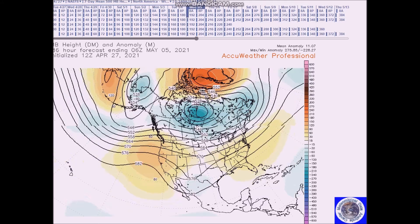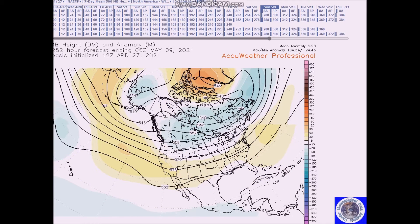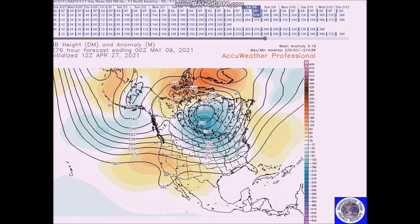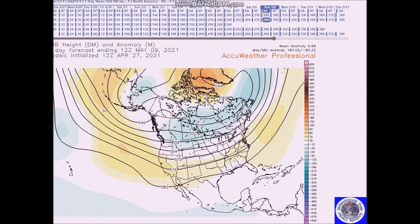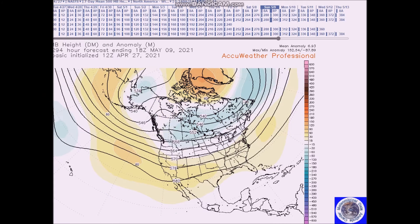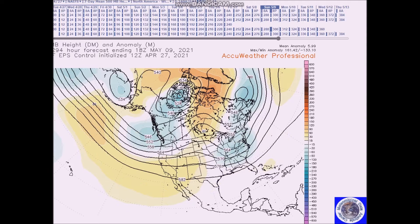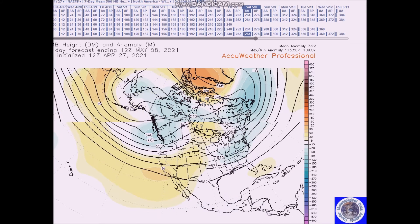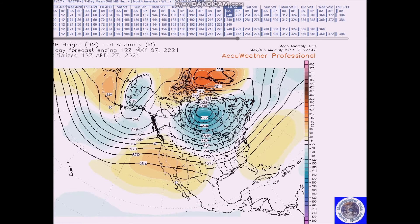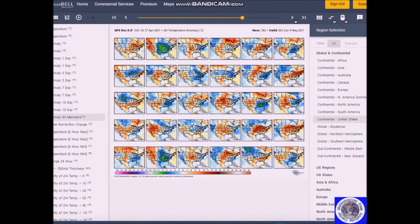For May 5th to the 9th, the ensembles predict a zone of flow with near to above normal heights. Looking at the ensembles — here's the European, here's the GEFS and European ensembles — most of the GEFS members have below normal heights here in the east and in the west.